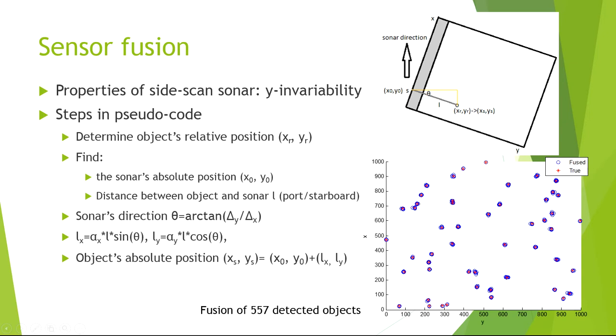Port and starboard are just nautical terms, which basically means left and right. Then we need to find the sonar's direction theta defined by arc tangent delta Y over delta X. And here LX is alpha X, the coefficient times L times sine theta. And LY is alpha Y times L times cosine theta. So the object's absolute position XS, YS is just XO, YO plus LX, LY.